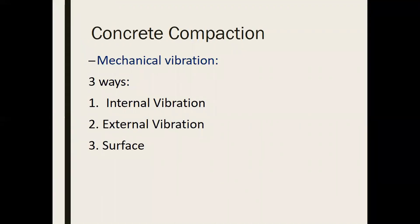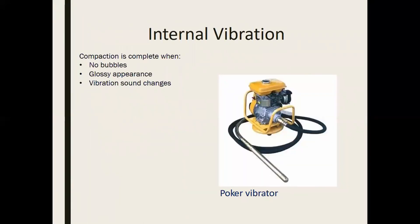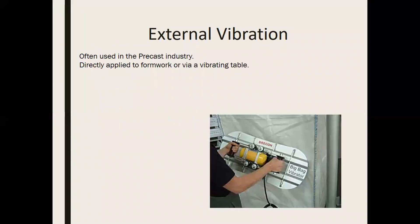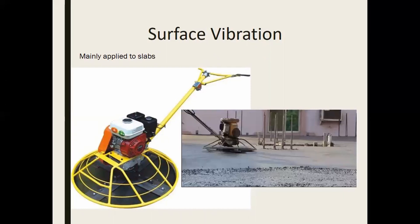Concrete compaction uses mechanical vibration in three ways: internal vibration, external vibration, and surface vibration. Internal vibration is complete when there are no bubbles, there is a glossy appearance, and the vibration sound changes. External vibration is often used in the precast industry, applying vibration directly to the outside of the formwork. Surface vibration is mainly applied for slabs.